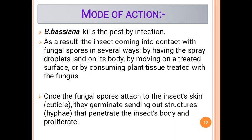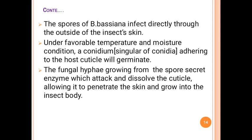Mode of action of Beauveria bassiana: the fungal spore comes in contact with the insect cuticle and germinates. After germination, hyphae penetrate and rapidly increase in numbers on the insect. The fungus secretes enzymes which dissolve the insect cuticle. Under favorable conditions, the fungus enters through the softer parts of the insect and produces the characteristic white bloom appearance.